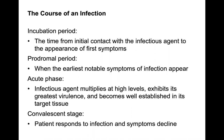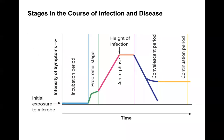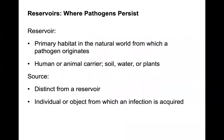The course of infection includes the incubation period — the time from initial contact with the infectious agent to the appearance of first symptoms. The prodromal period is when the earliest notable symptoms appear. The acute phase is when the infectious agent multiplies at high levels, exhibits its greatest virulence, and becomes well established in the target tissue. The convalescent stage is when the patient responds to the infection and symptoms decline.